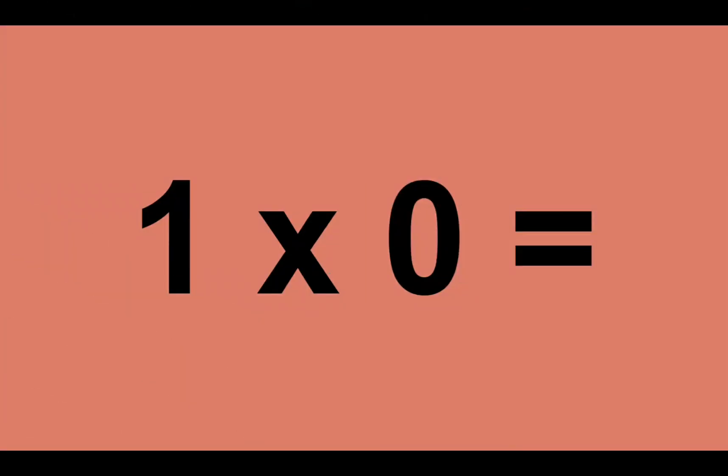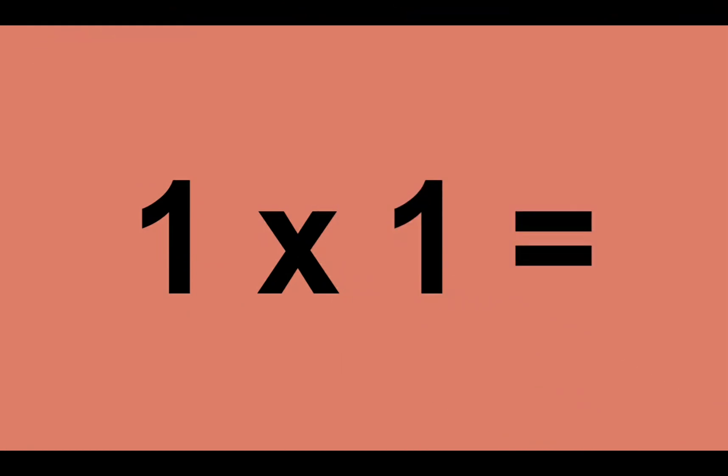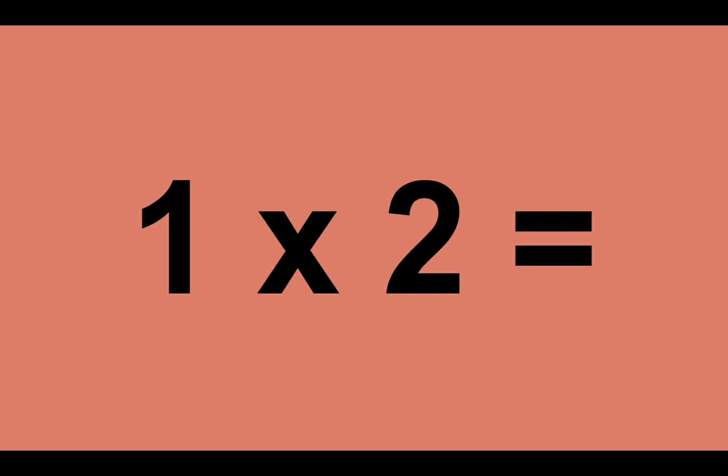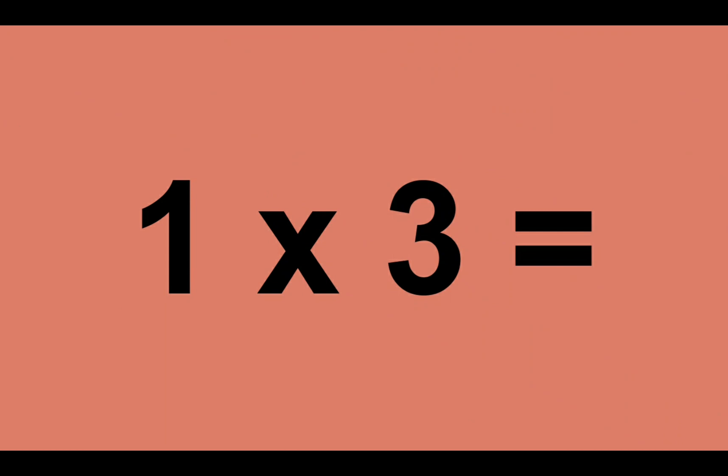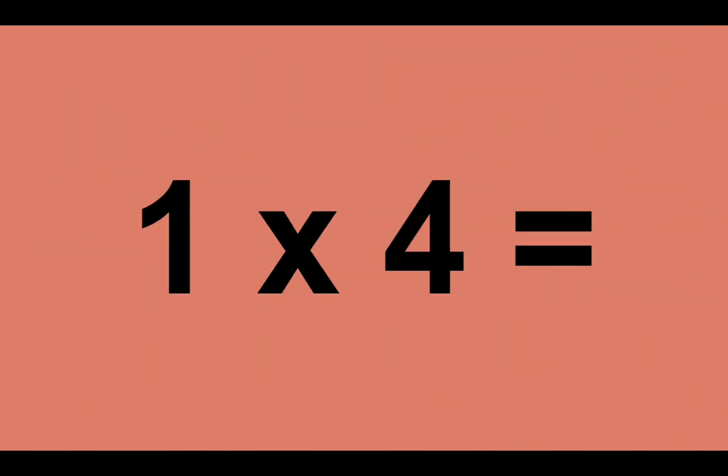One times zero equals zero. One times one equals one. One times two equals two. One times three equals three. One times four equals four.